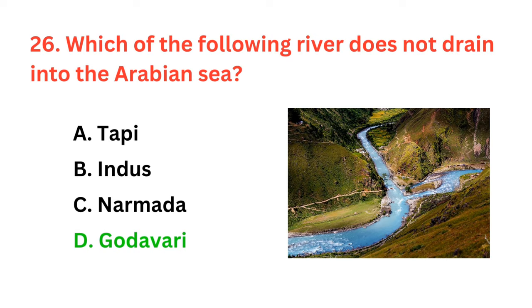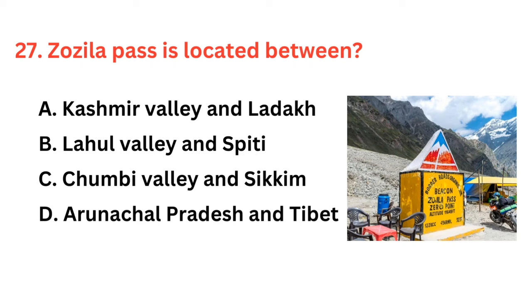Zojila Pass is located between? The correct answer is option A: Kashmir Valley and Ladakh.